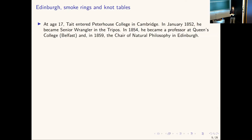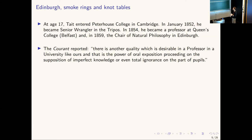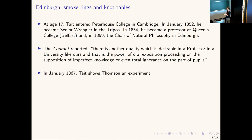Two years later, in 1854, Tate became a professor at Queen's College in Belfast. It was during his time in Belfast that he began a correspondence with William Rowan Hamilton. Tate was a huge proponent of Hamilton's quaternions. His heart was in Edinburgh, and five years later a professorship opened up. He became Chair of Natural Philosophy in Edinburgh — interestingly, he beat out Maxwell, not because he was a better scientist, but because he was a better teacher.